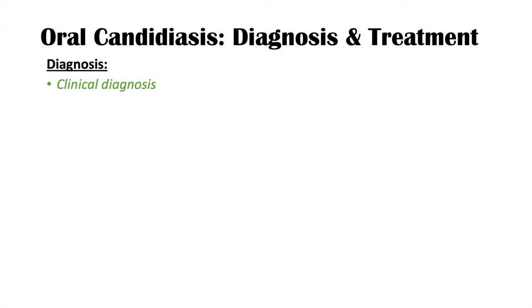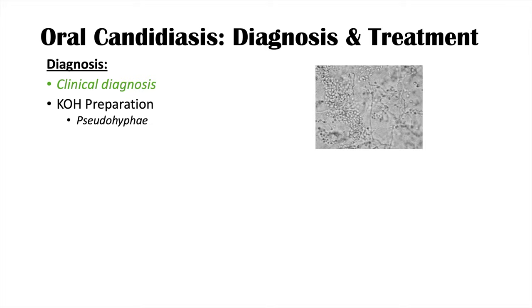Diagnosis of oral candidiasis is a clinical diagnosis — examining the tongue and obtaining history and risk factors can lead a clinician to this diagnosis. A potassium hydroxide (KOH) preparation can also be used, under which you can see pseudohyphae. It's important to assess for underlying risk factors such as immunocompromise or vitamin deficiencies.